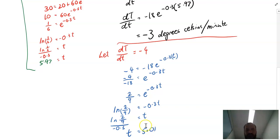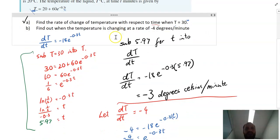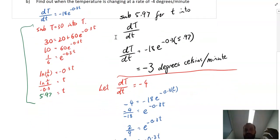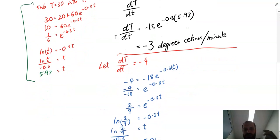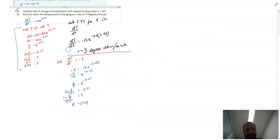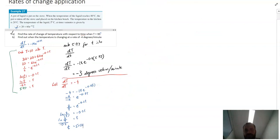So what does that mean? At time 5.01, the temperature is dropping at a rate of 4 degrees per minute. That is our full rates of change application style question. Now, as with most applications, I cannot run through every single version of how a question might be asked here. But you've got to understand that you've got an initial equation, you've got the rate of change equation, and then you've just got to decide what makes sense to sub in for what variable.